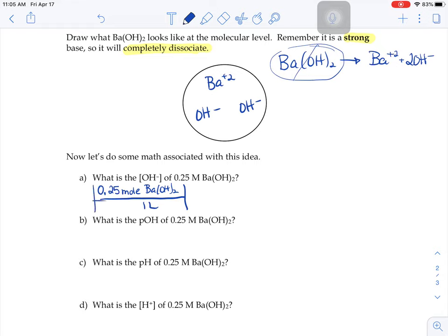We're trying to figure out the molarity of the hydroxide, and we know the molarity of the solution. Well, if you have one formula unit of barium hydroxide, it breaks up into one barium ion and two hydroxide ions.